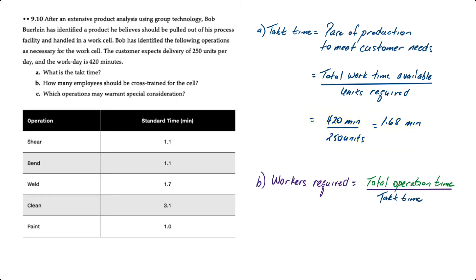The second requirement for the number of workers required is equal to the total operation time divided by the takt time. Well, if we look at the sum of the standard times and the information provided, the total operation time is 8.01 minutes.